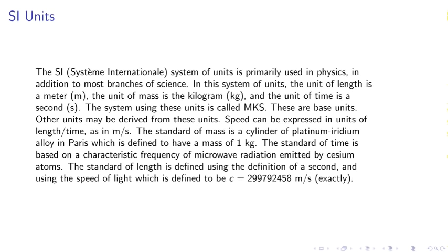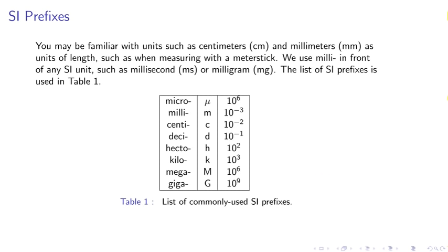SI units. The International System of Units is primarily used in physics, in addition to most branches of science. In this system of units, the unit of length is a meter, the unit of mass is a kilogram, the unit of time is a second. The system using these units is called MKS. These are the base units. Other units may be derived from these units. Speed can be expressed in units of length per time, as in meters per second.